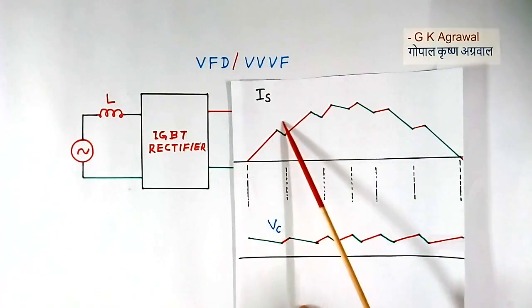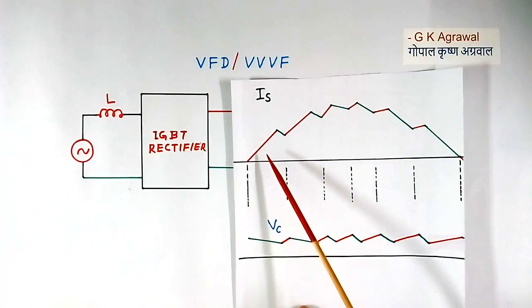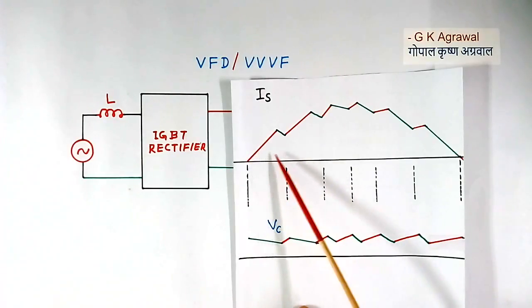So you are seeing here, distortion is there. Here it is there. Here it is there. But distortion is less as compared to thyristor.